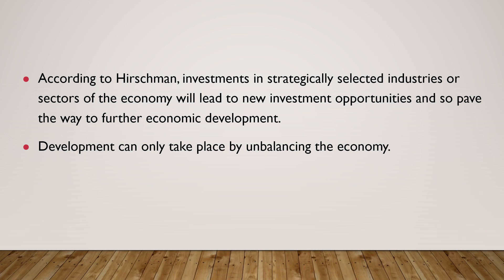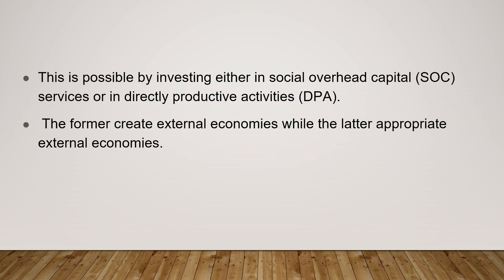Hirschman said that development should take place by deliberately unbalancing the economy. To do this, we select some strategically important core industries and invest in them. For this, he proposed two approaches: one is called Social Overhead Capital, or SOC, and the other is Directly Productive Activities, or DPA. The former would create external economies, while the latter would appropriate external economies.